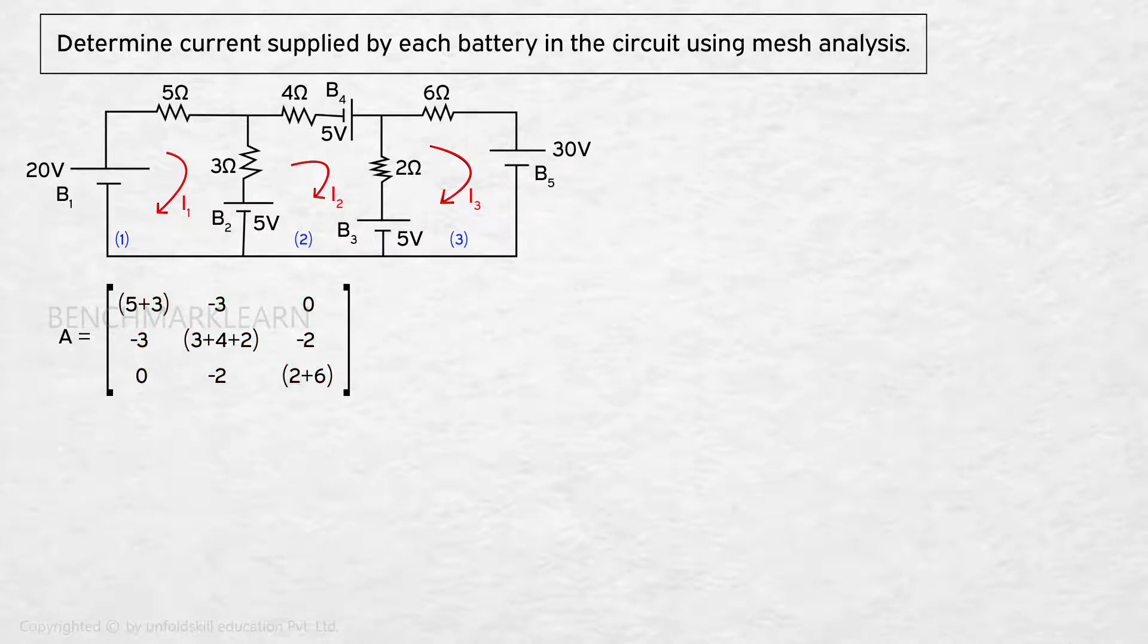We can write down the elements of that matrix. The diagonal elements will be the sum of all resistors in the loop. The off-diagonal elements are negative of resistors common to the loop.